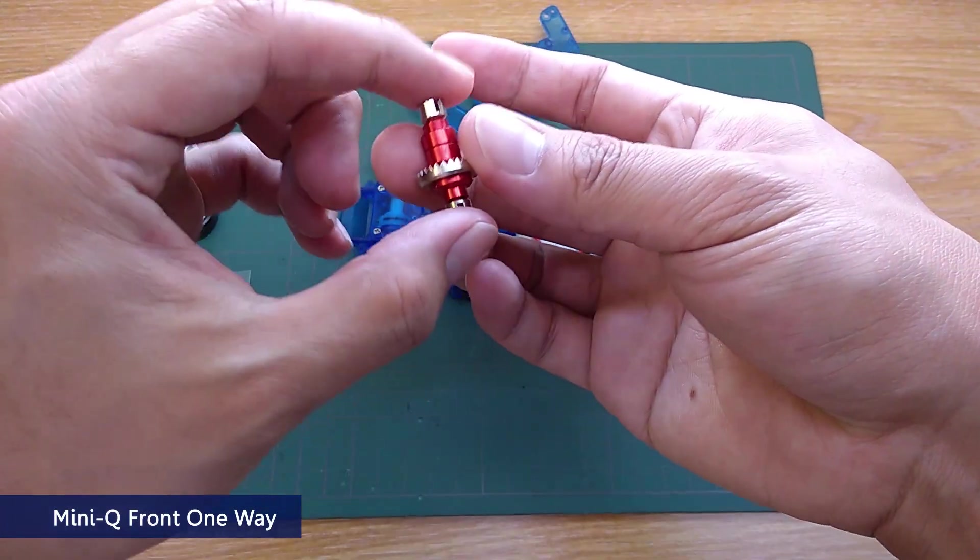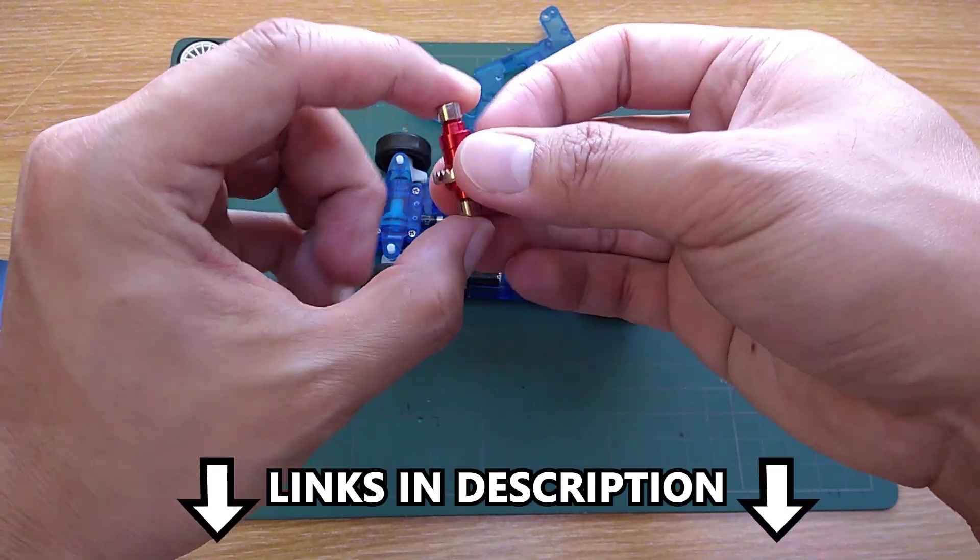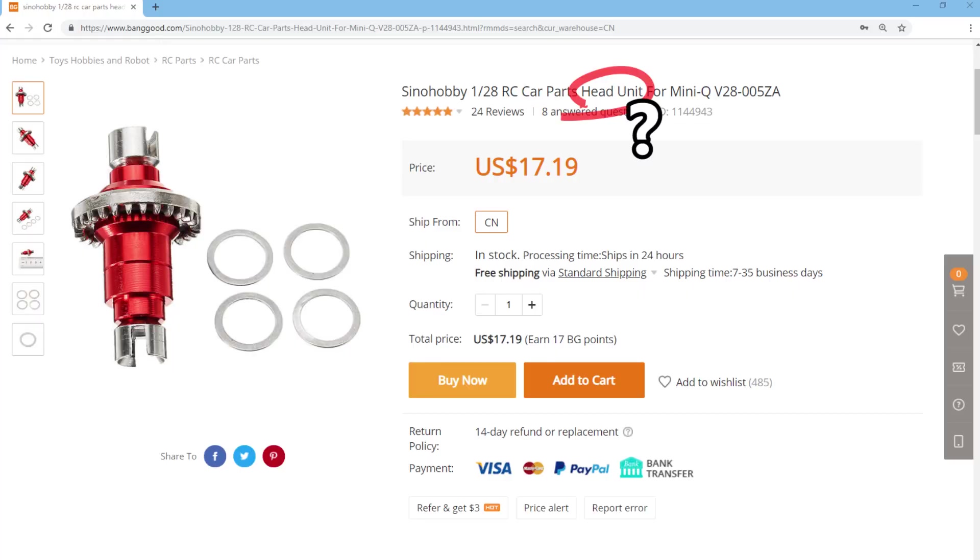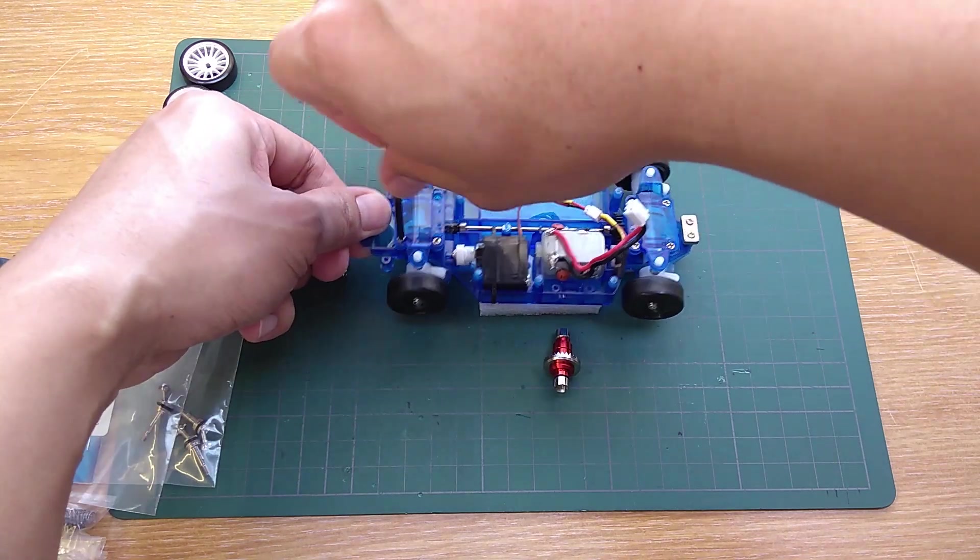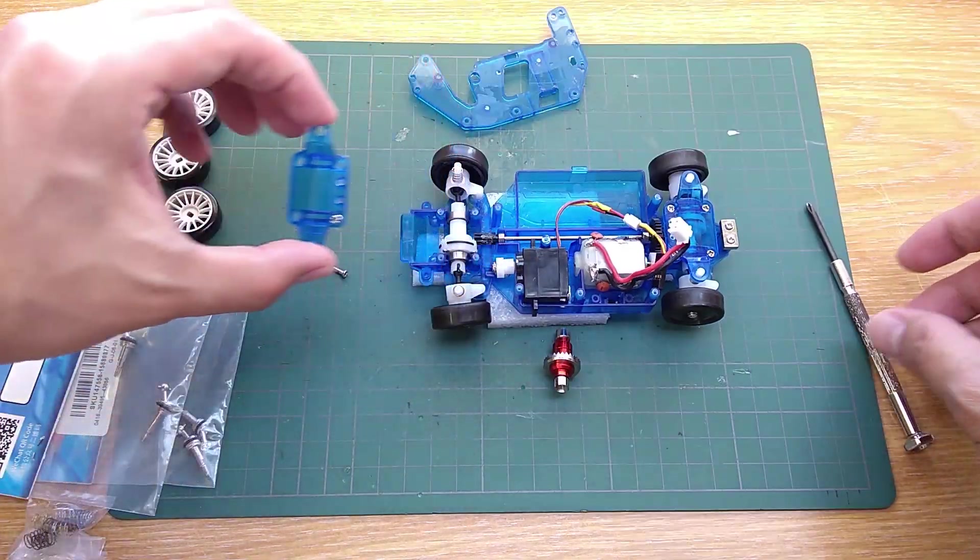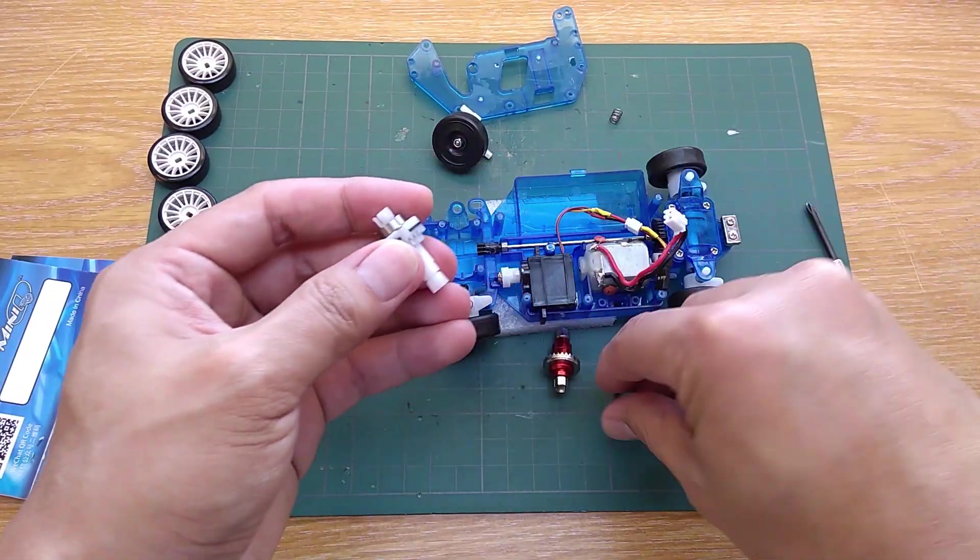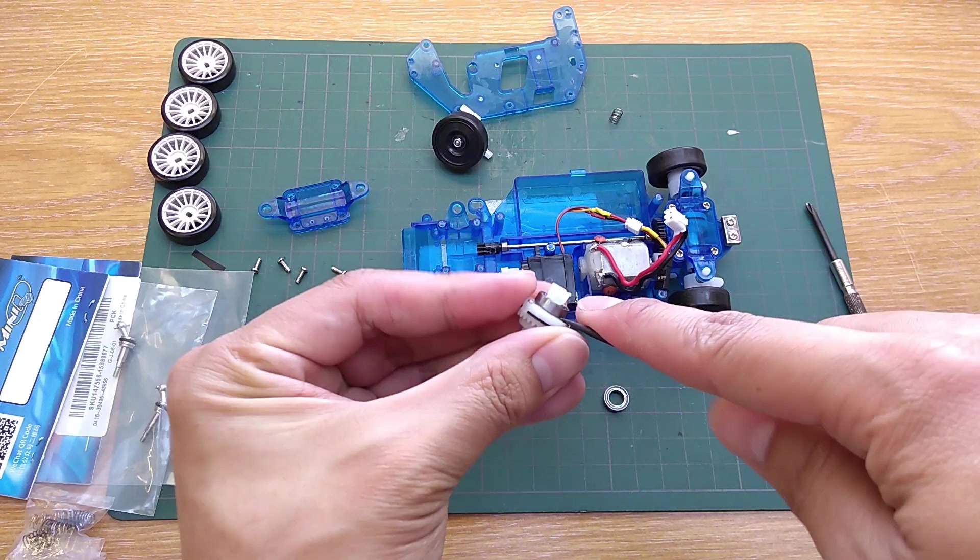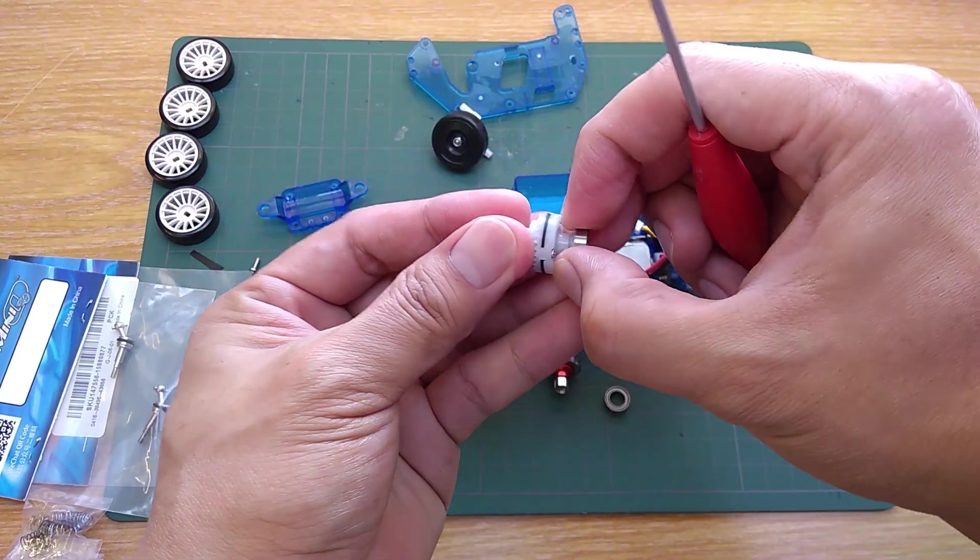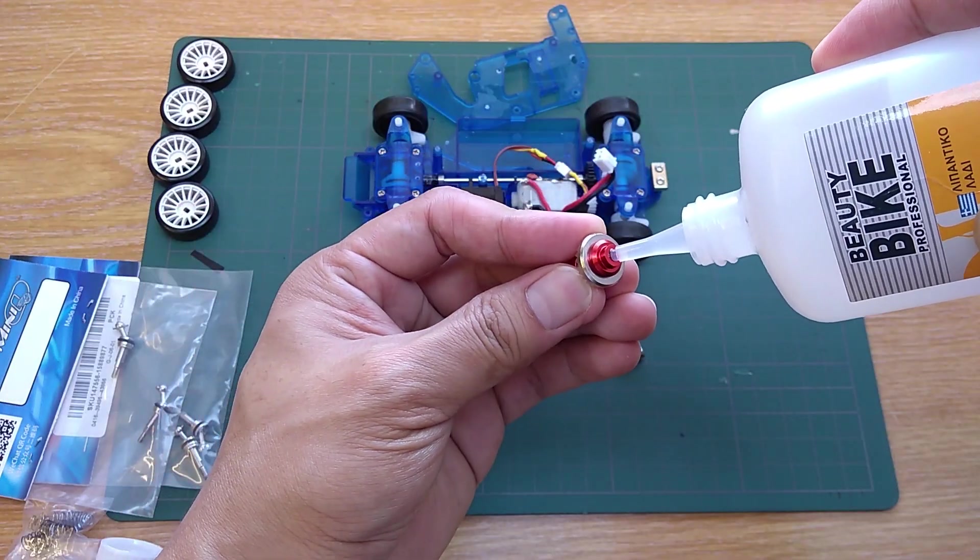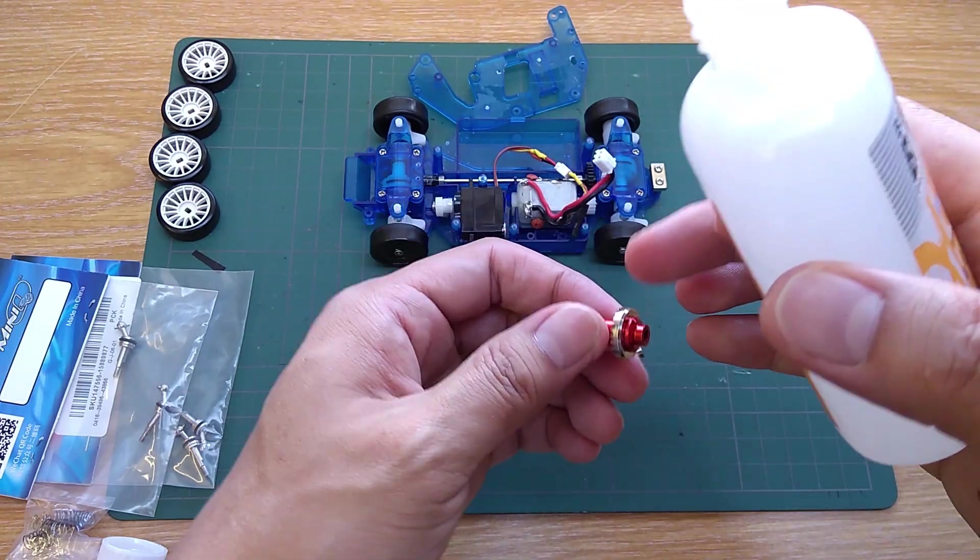Here's the front one way from Mini Q provided by Banggood. Link to buy is in the description below. The name on the website is confusing because it says head unit for some reason. So don't mind that and just remember head unit means front one way. Replacing is easy. Open the front gearbox, pull the old diff out, pull the bearings out and put them on the new diff. It's also better if you drop some lube into the one way. I'm using bicycle chain lube because it's easy to find and it works for me.